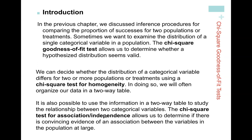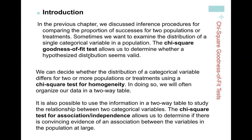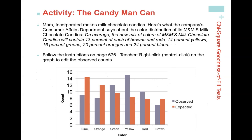Let's look at goodness of fit — it allows us to determine whether a hypothesized distribution seems valid. The first example from your book is about M&Ms. M&Ms have a hypothesized distribution of the categorical variable color. There are six colors: blue, orange, green, yellow, red, and brown. The company claims: 13% brown, 13% red, 14% yellow, 16% green, 20% orange, and 24% blue.